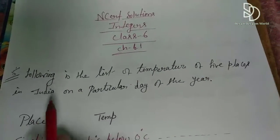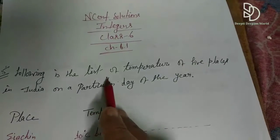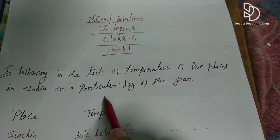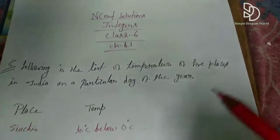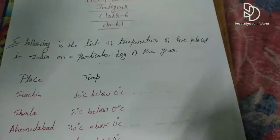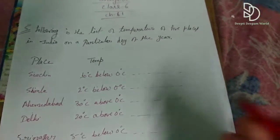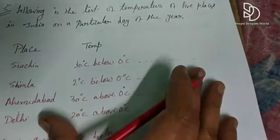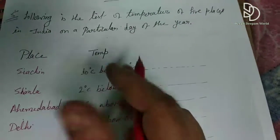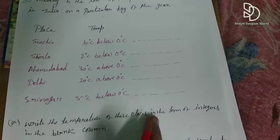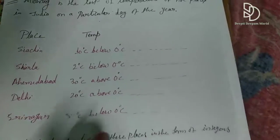Let's see what the 5th question is. The following is the list of temperatures of 5 places in India on a particular day of the year. We have 5 places and we need to show their temperatures. Write the temperature of these places in the form of integers in the blank column.